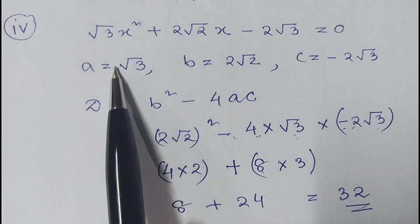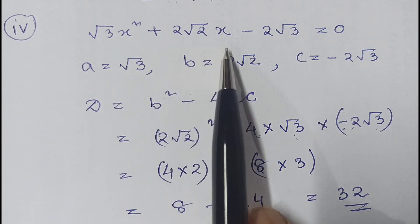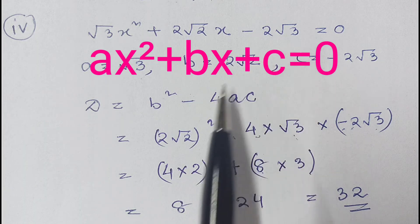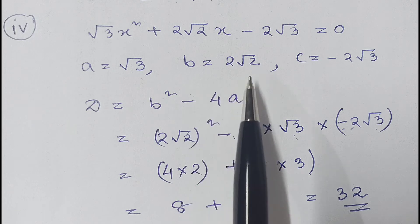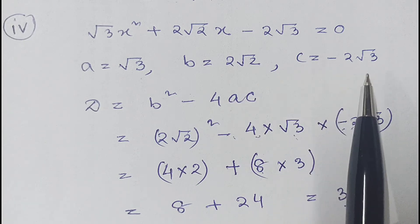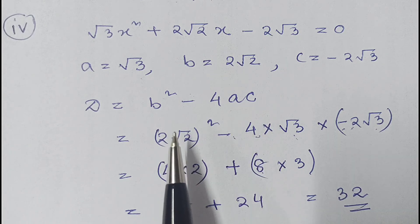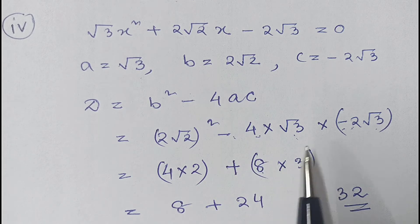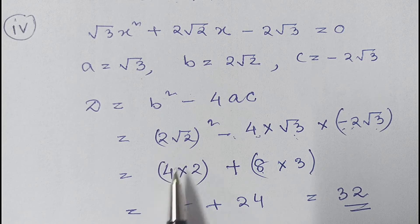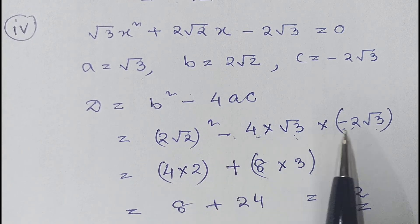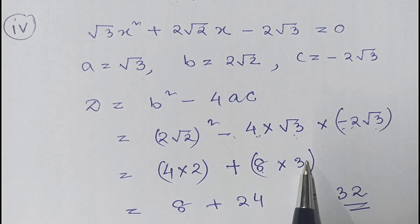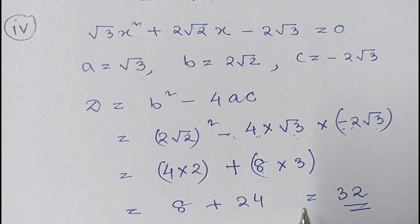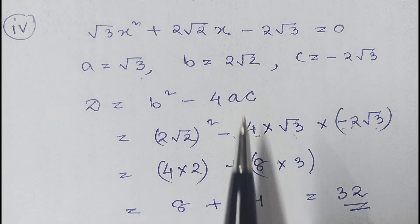The fourth part is √3 x² + 2√2 x − 2√3 = 0. Comparing with ax² + bx + c = 0: a = √3, b = 2√2, c = −2√3. Discriminant = b² − 4ac = (2√2)² − 4(√3)(−2√3) = 4×2 + 4×2×3 = 8 + 24 = 32. Therefore the discriminant is 32.